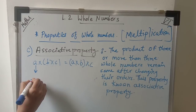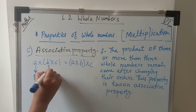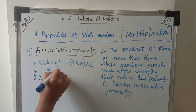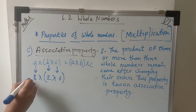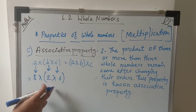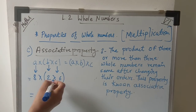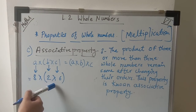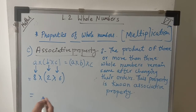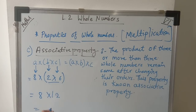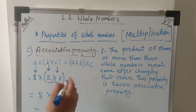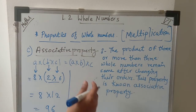Let's take a = 8, b = 2, and c = 6 to understand the associative property. On the left hand side, we multiply a by (b × c): first 2 × 6 = 12, then 8 × 12 = 96. So in this order we get 96.